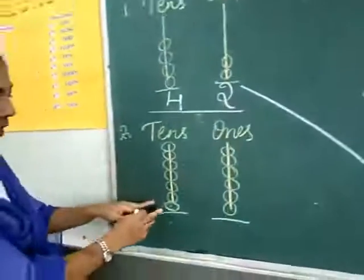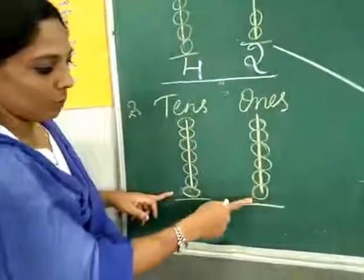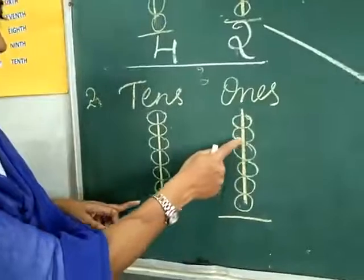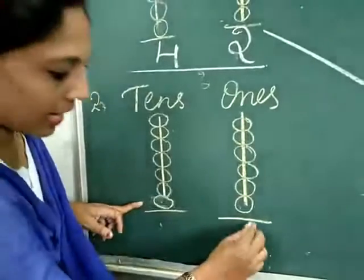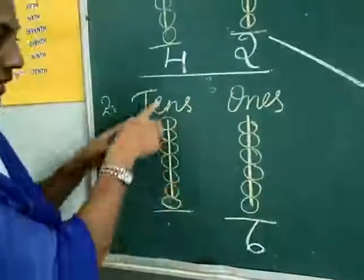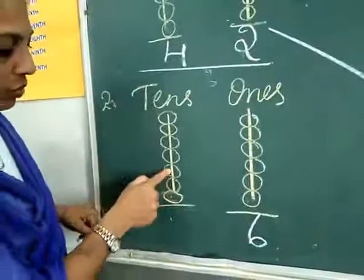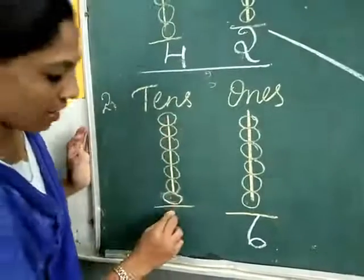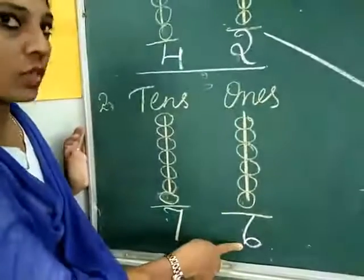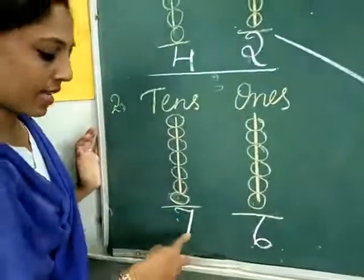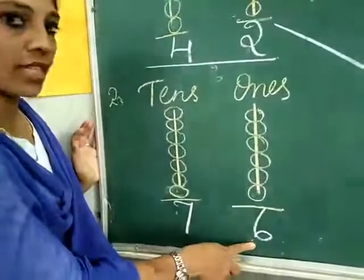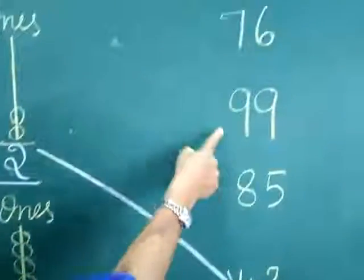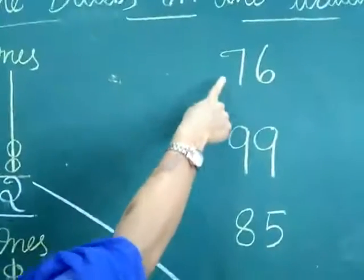Second one. Count how many beads are there in the ones place: one, two, three, four, five, six — write six. And in the tens place: one, two, three, four, five, six, seven — seven tens. Seven tens and six ones is equal to seventy-six. Can you find seventy-six? Yes, it is on the top. Just match seventy-six.